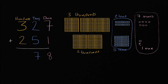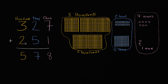And then finally, if you have three hundreds and you add two more hundreds, how many hundreds are you going to have? You're going to have five hundreds. You see these five groups of a hundred right over here. So you put a five in the hundreds place. Three hundred and twenty-seven plus two hundred fifty-one is five hundred and seventy-eight — five hundreds, seven tens, and eight ones.